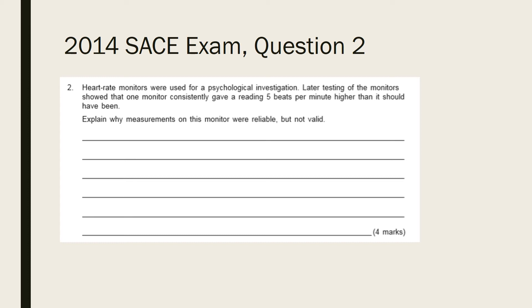This question is worth four marks which means you need two connected well-made points. As you're being asked to explain why the measurements were reliable but not valid, one of your points should relate to reliability, the other to validity.